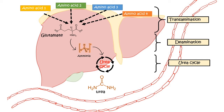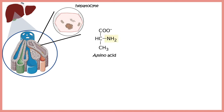The urea cycle generates urea from ammonia. This is the overall workflow of amino acid catabolism. Looking in more detail: the first step is funneling amino acids into glutamate, and this all happens inside the liver hepatocytes. Any amino acid gets converted into a keto acid — a process known as transamination.